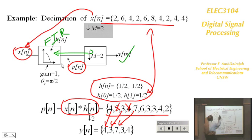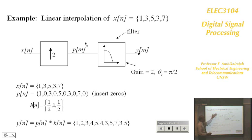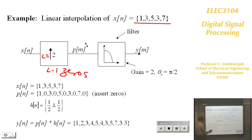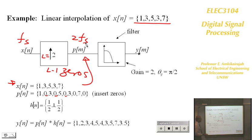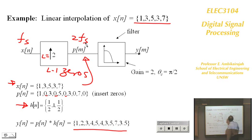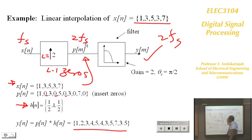The same operation applies for interpolation: start with signal samples, insert zeros (L=2 means one zero between each sample), pass through the filter by convolving Pm with Hm to get Ym. If you started with 5 samples, you end up with 10 samples at twice the sampling frequency.